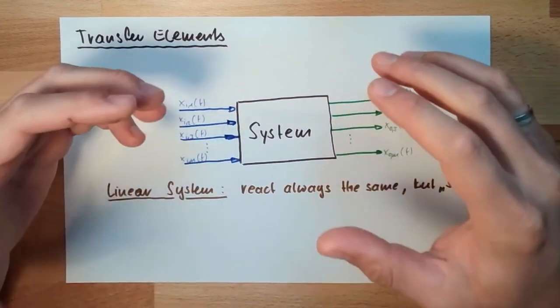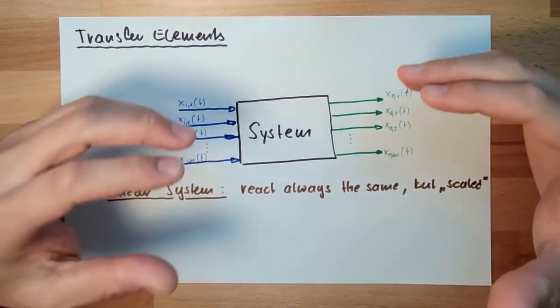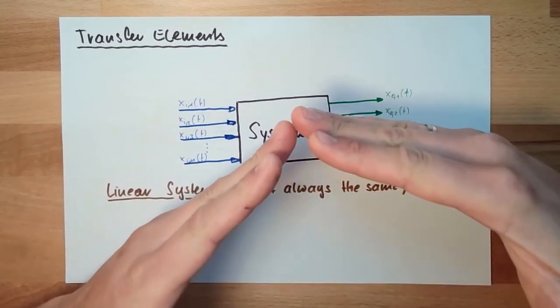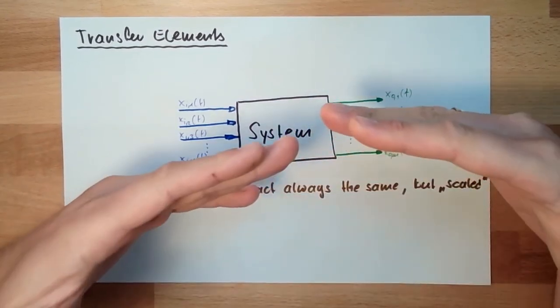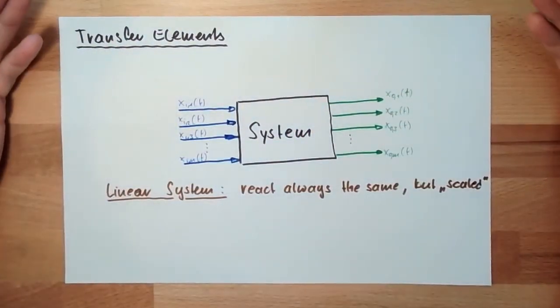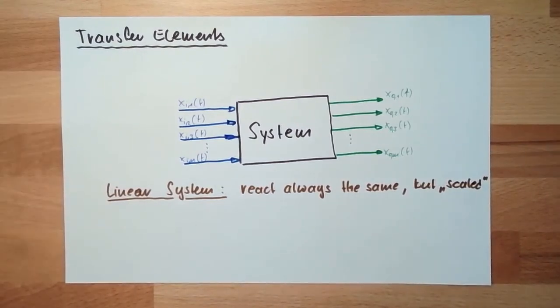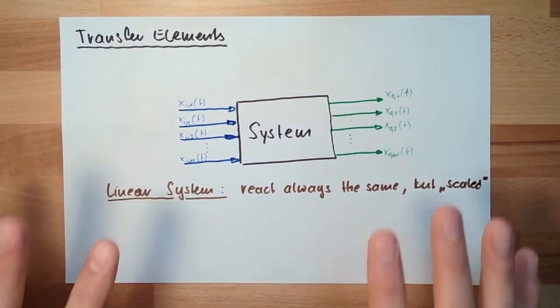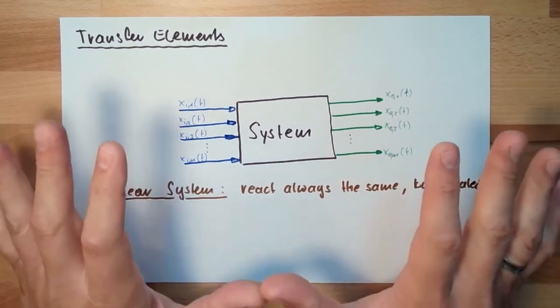So if there are non-linear elements inside, like some limitations, maximum power, or something like this, then we might run into an issue. Then this is not covered by the system theory.